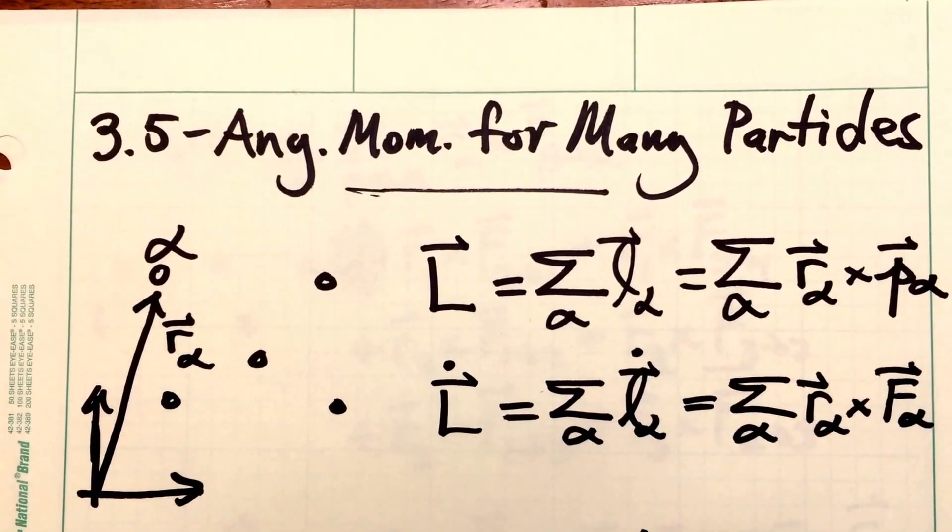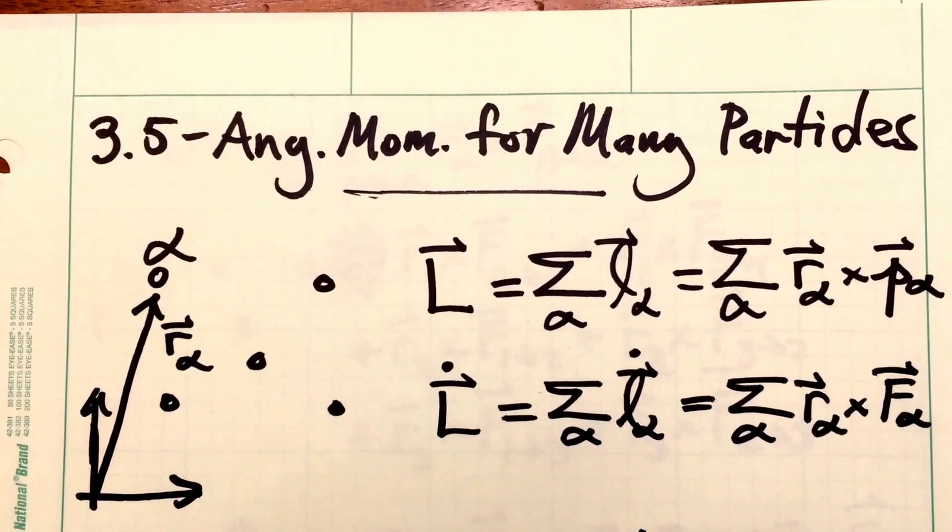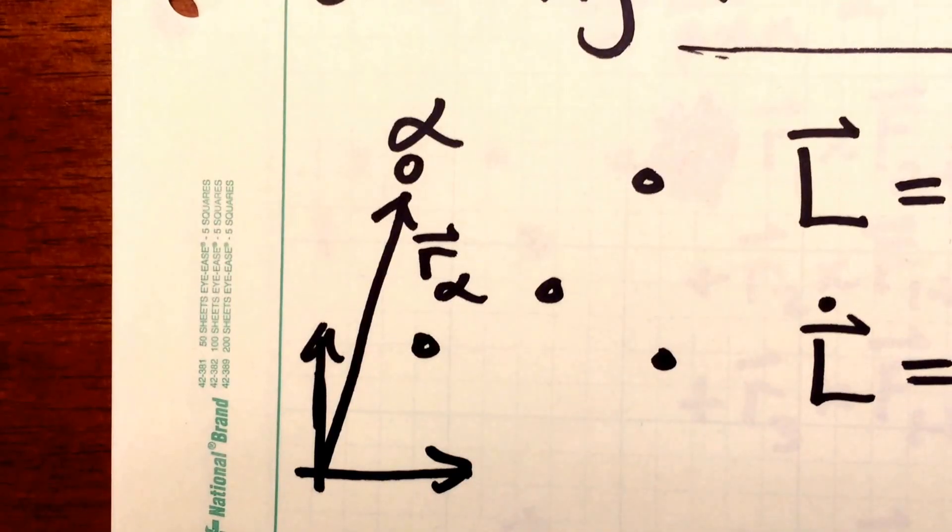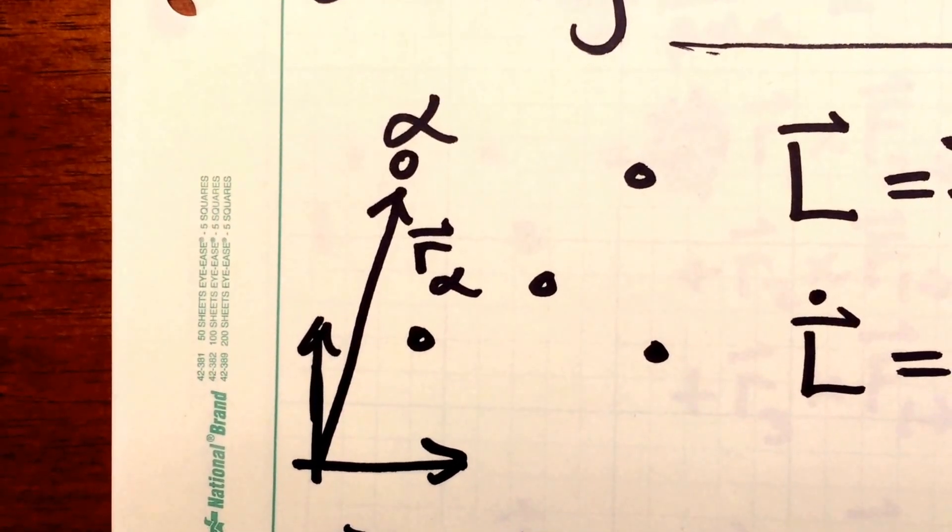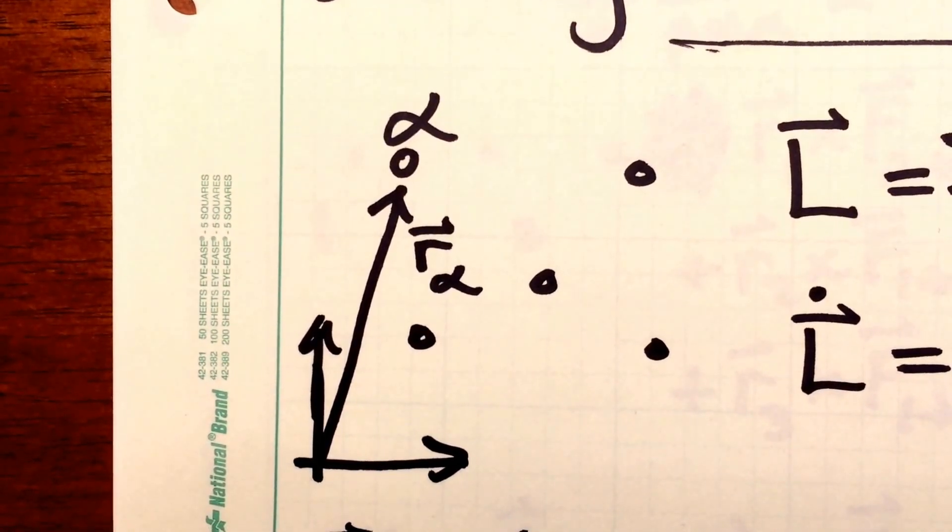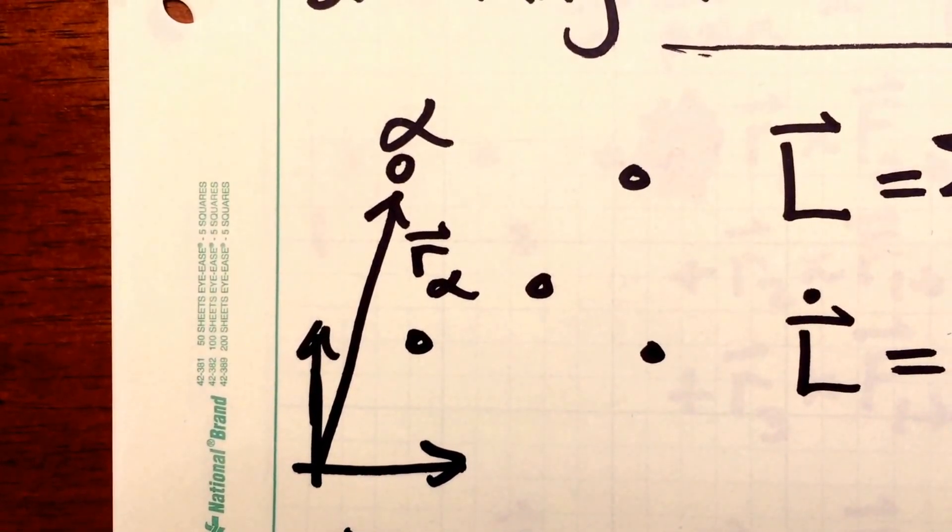In this section, we'll generalize our results for one particle to the angular momentum of many particles. Imagine you have a large collection of particles. Each particle is labeled with a number alpha. The position of particle alpha is shown here with the r vector.